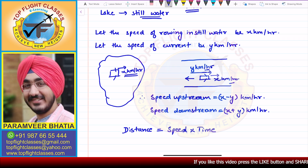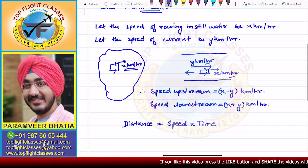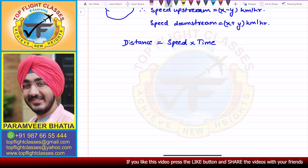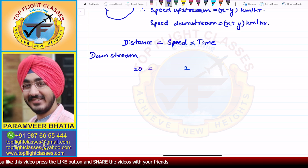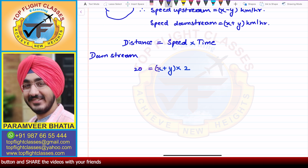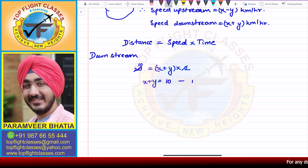In the question it says she can row 20 kilometers downstream in two hours. So for the downstream case: distance is 20 kilometers, time is two hours, and speed is x plus y. Applying the formula, 20 divided by 2 gives us 10, so x plus y equals 10. This is our first equation.